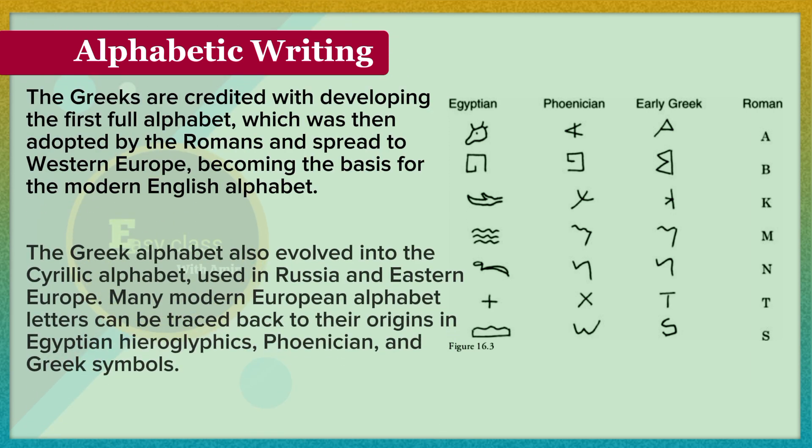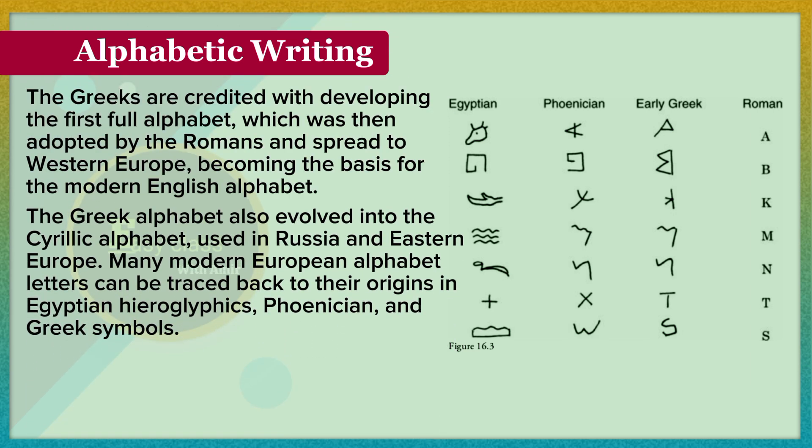The Greek alphabet also evolved into the Cyrillic alphabet, used in Russia and Eastern Europe. Many modern European alphabet letters can be traced back to their origins in Egyptian hieroglyphics, Phoenician, and Greek symbols.